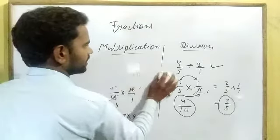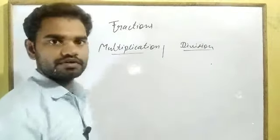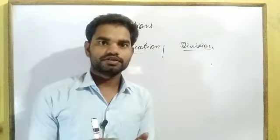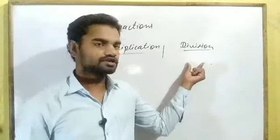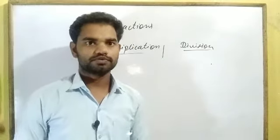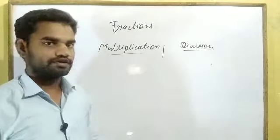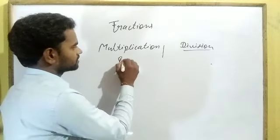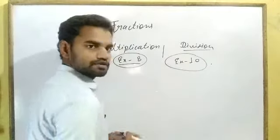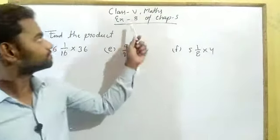So, to perform multiplication: numerator is multiplied by numerator and denominator by denominator. In performing division: first change the division symbol into multiplication, and the next term will be converted into its reciprocal form. This is the basic process to perform multiplication and division. Now we will start the exercises related to multiplication and division. The exercise related to multiplication is Exercise 8 and the exercise related to division is Exercise 10. We will start Exercise 8 of Chapter 7.